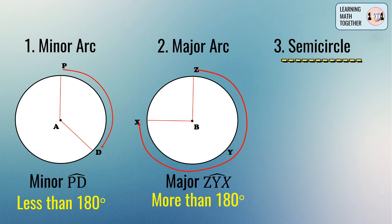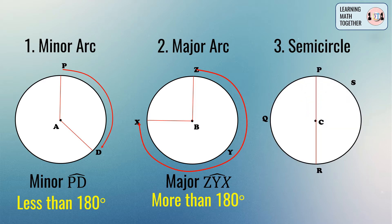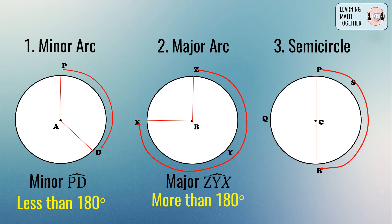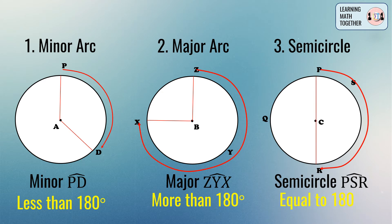Now let's go to the third type: the semicircle. From the word 'semi,' that means it's half of a circle. In circle C, we actually have two semicircles — semicircle PSR and semicircle PQR. We call an arc a semicircle if its measurement is equal to 180 degrees.